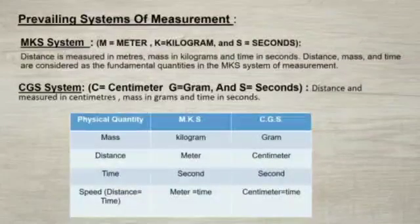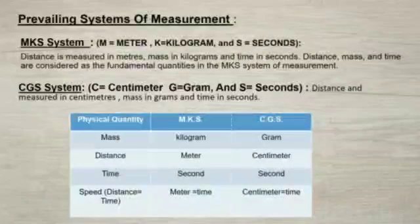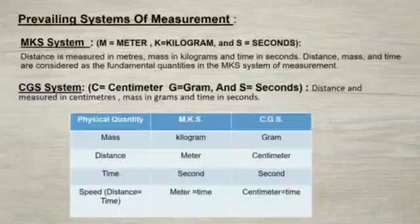In the prevailing system of measurement, distance is measured in meter, mass in kilogram and time in second. Whereas in the CGS system, distance is measured in centimeter, mass in gram and time in second. In the MKS system of measurement, distance, mass and time are accepted as the fundamental quantities. These three quantities are used to measure all other quantities.